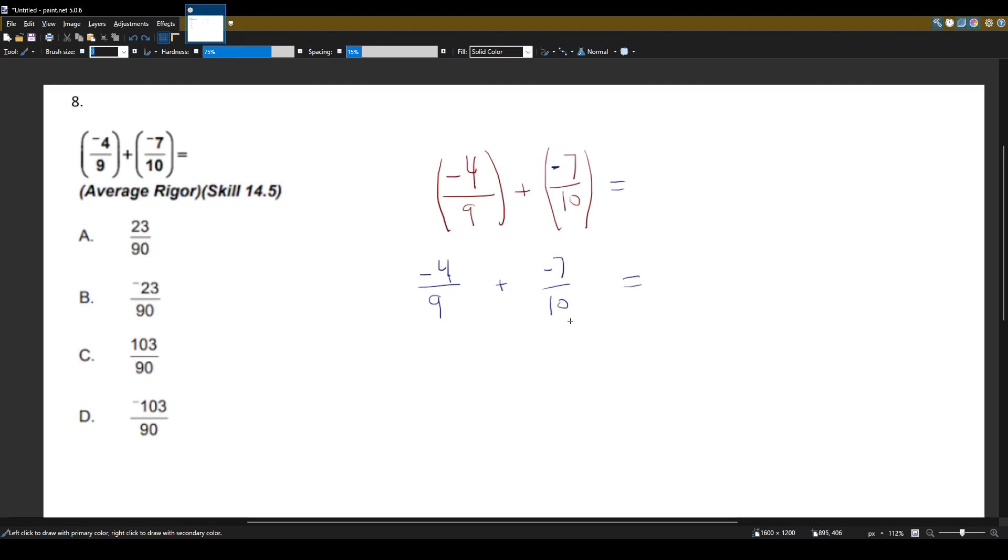And the way we can do that is we can multiply the first fraction by the denominator of the second fraction. So the denominator of the second fraction is 10, so I'll multiply the top number and the bottom number by 10. And similarly to get the same denominator with the second fraction, I'll multiply it by the denominator of the first one. So I'll multiply the top and bottom by 9.